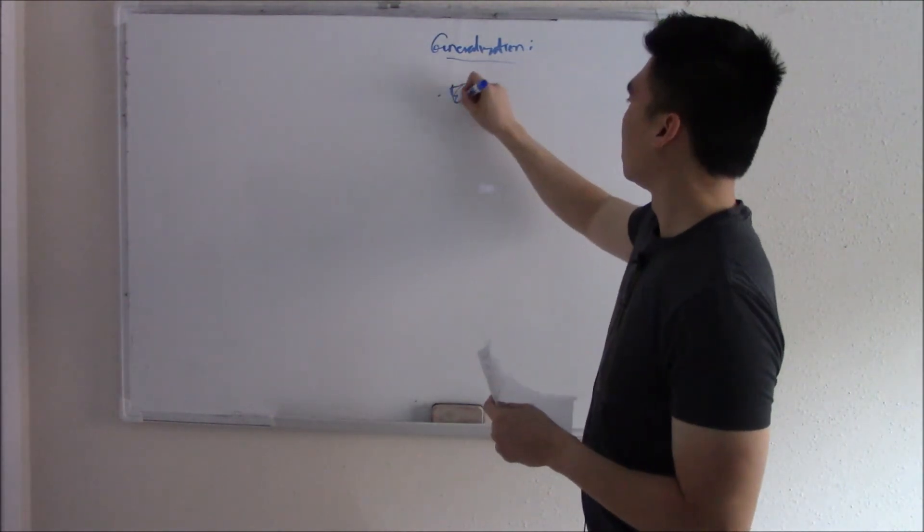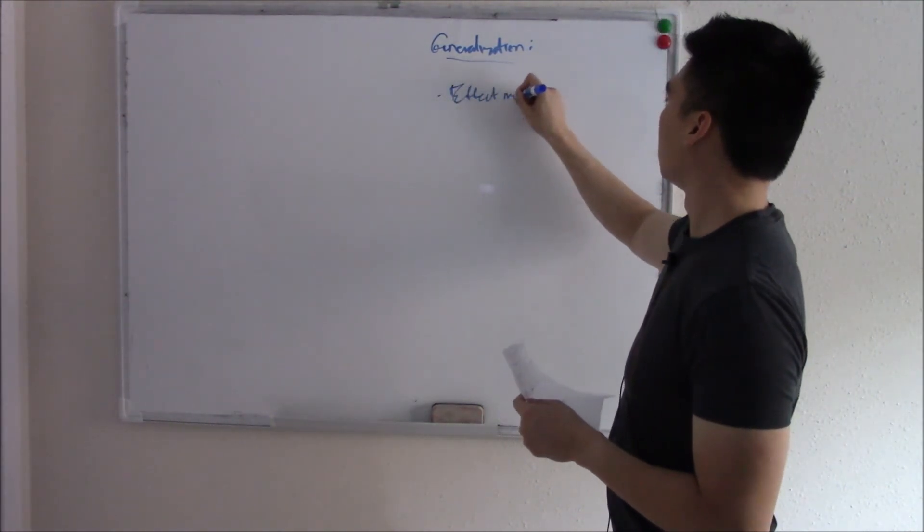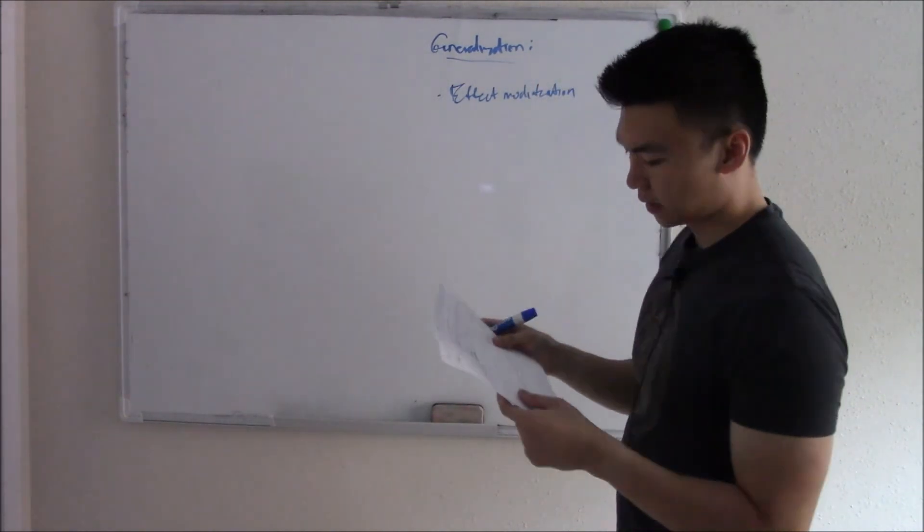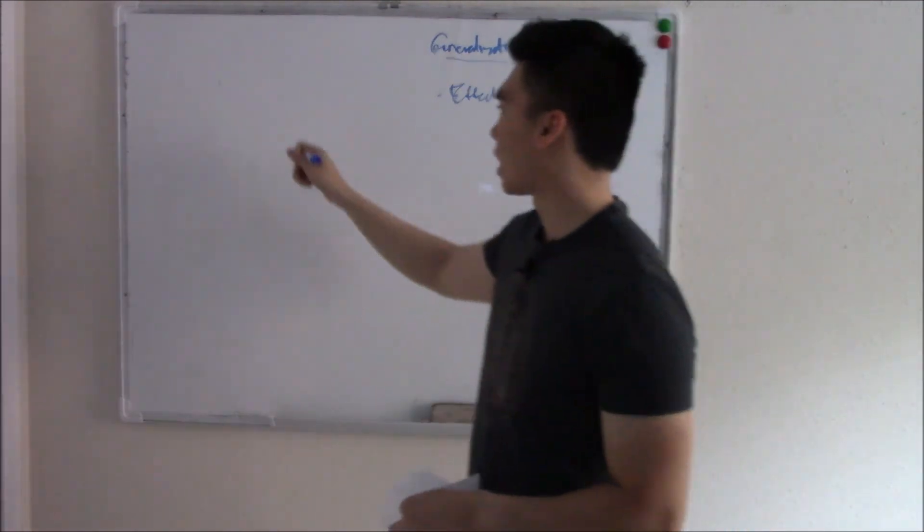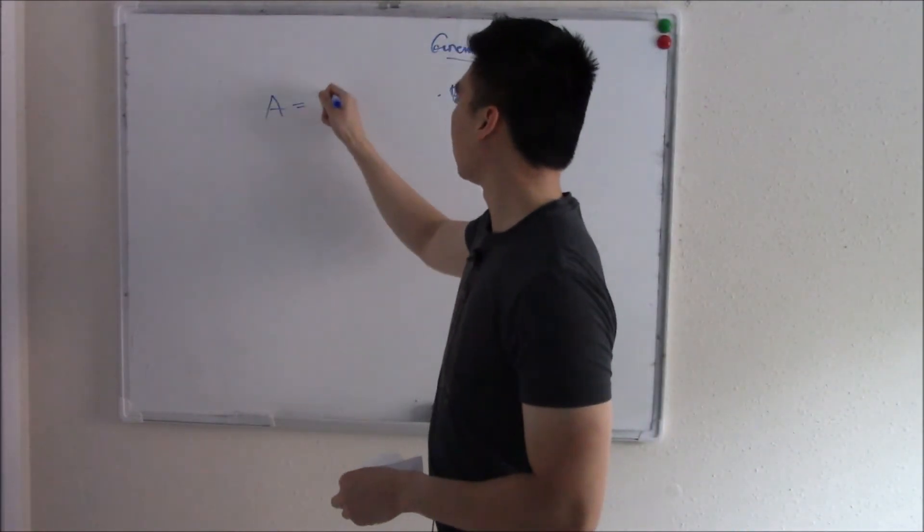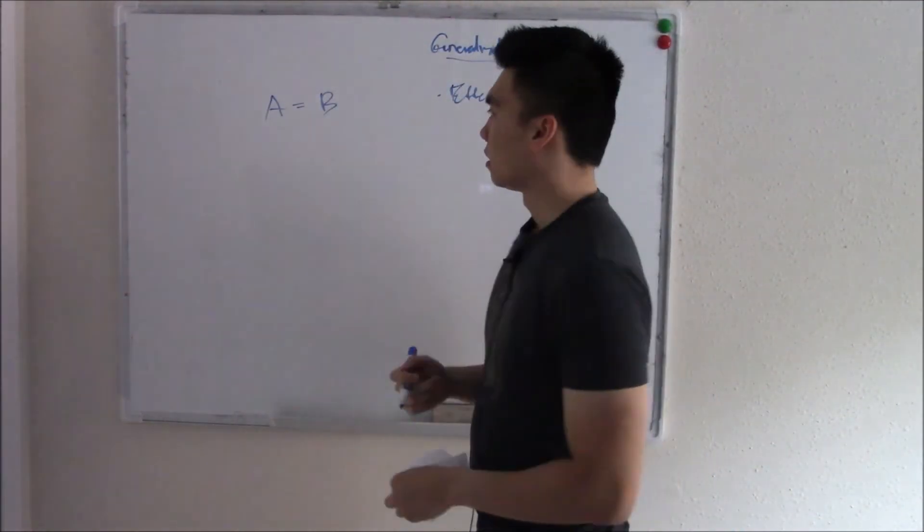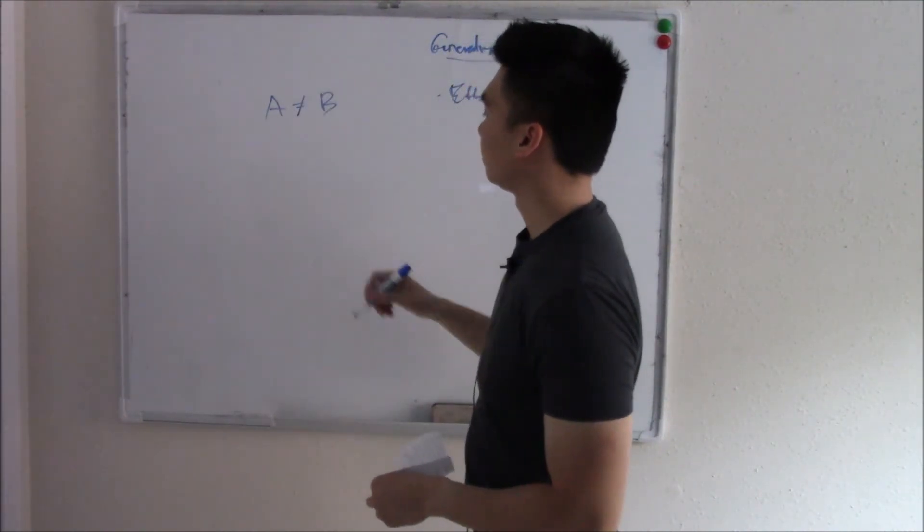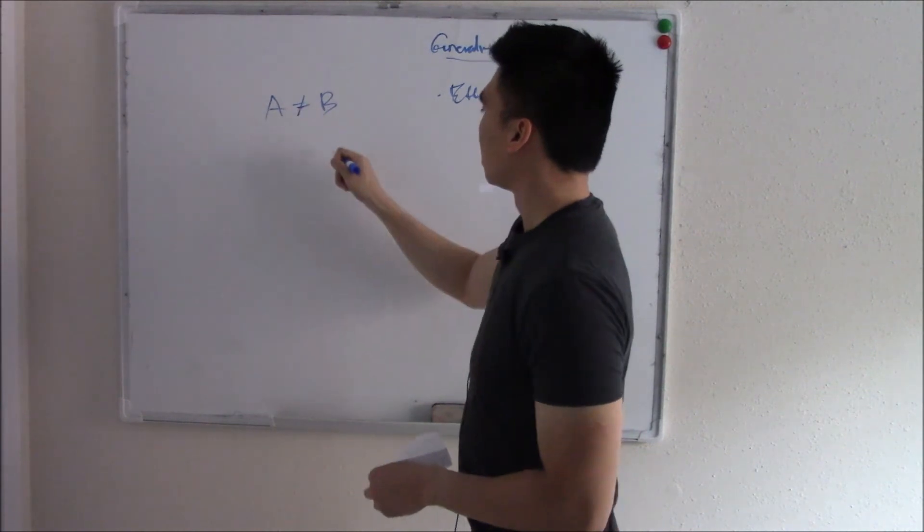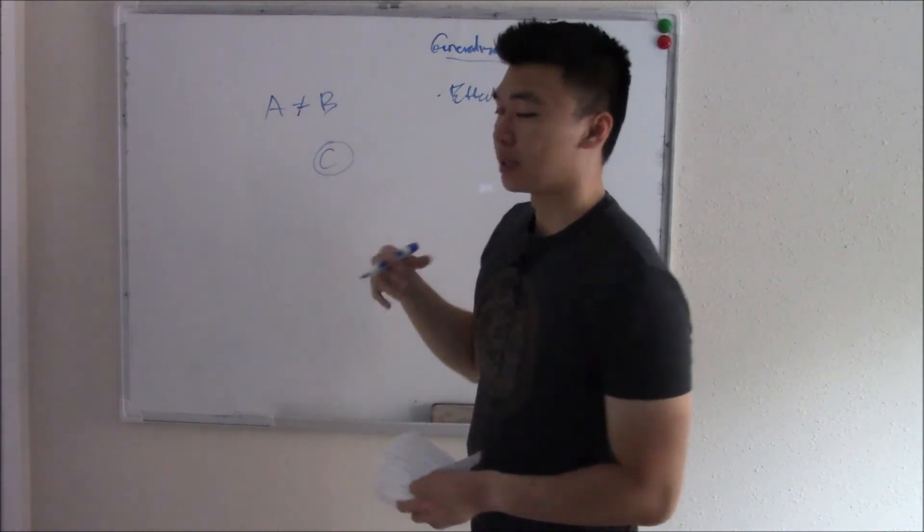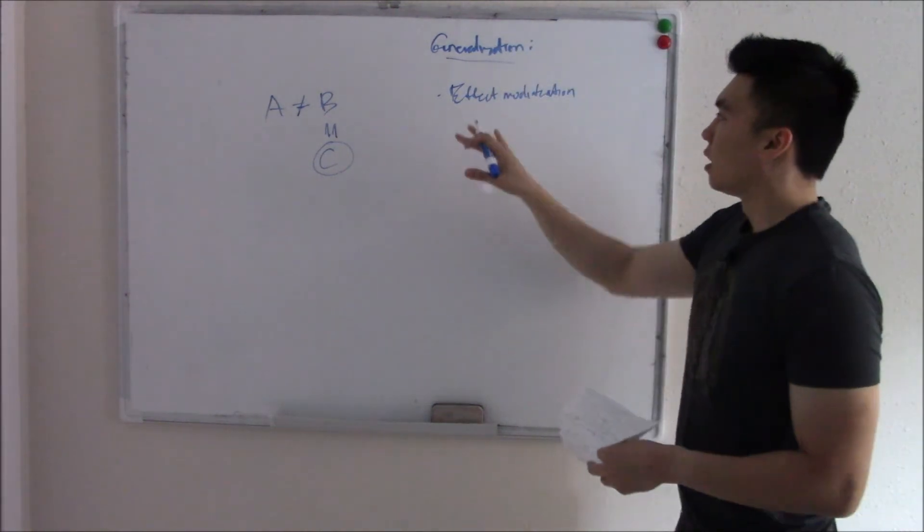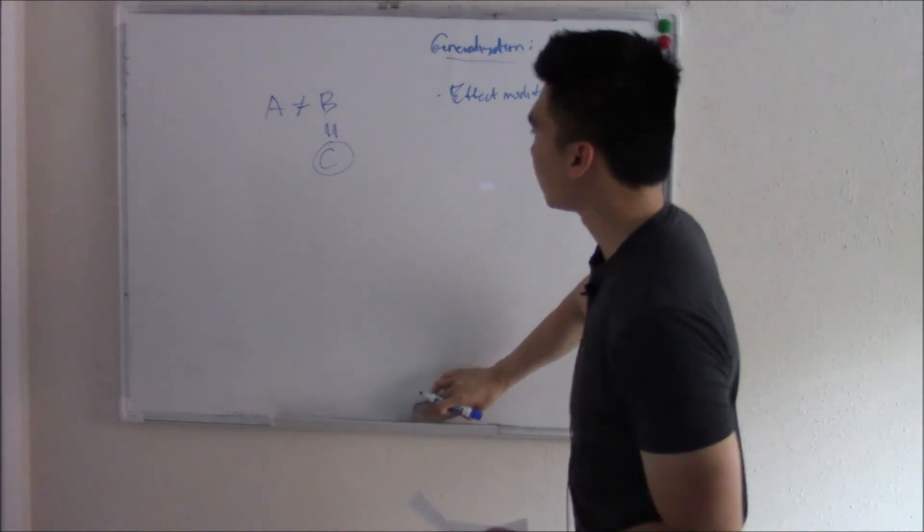There's something called effect modification. When we talked about confounding bias, we talked about how we really wanted A to equal B. But in reality, they didn't equal each other. There was instead an outside force that we didn't see, and that is what caused B. That's confounding bias. Effect modification is a little bit different.